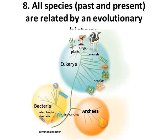Our final characteristic of life states that all species, past and present, are related by an evolutionary history. So all species are going to be related to each other. We'll look at three different domains of life: the domain Bacteria shown in yellow, the domain Archaea in orange, and the third domain Eukarya in blue. The domain Eukarya includes plants, fungi, animals, and protists — these four kingdoms in the blue.